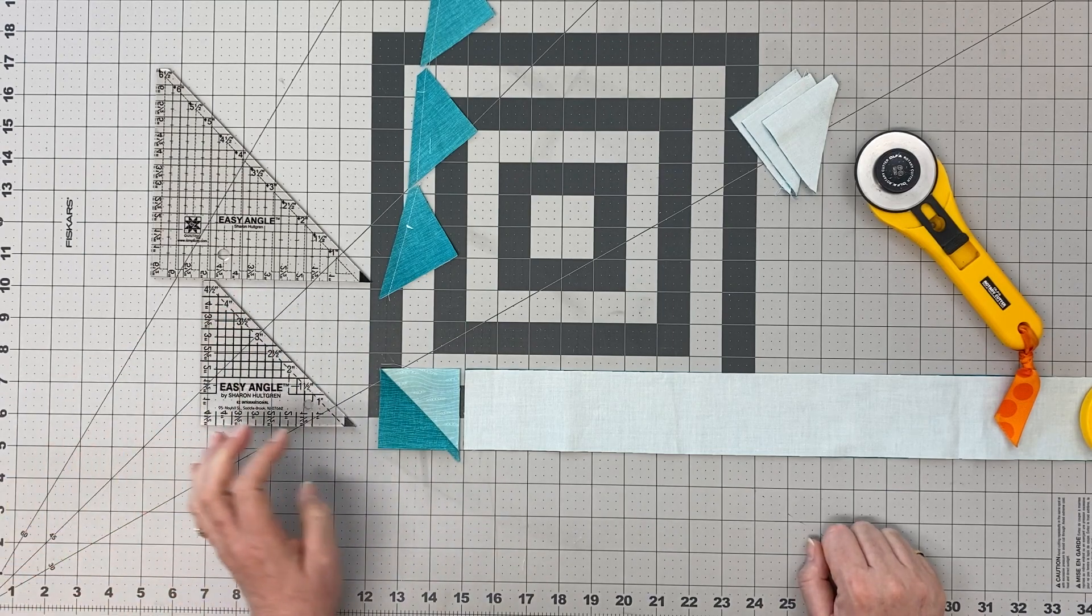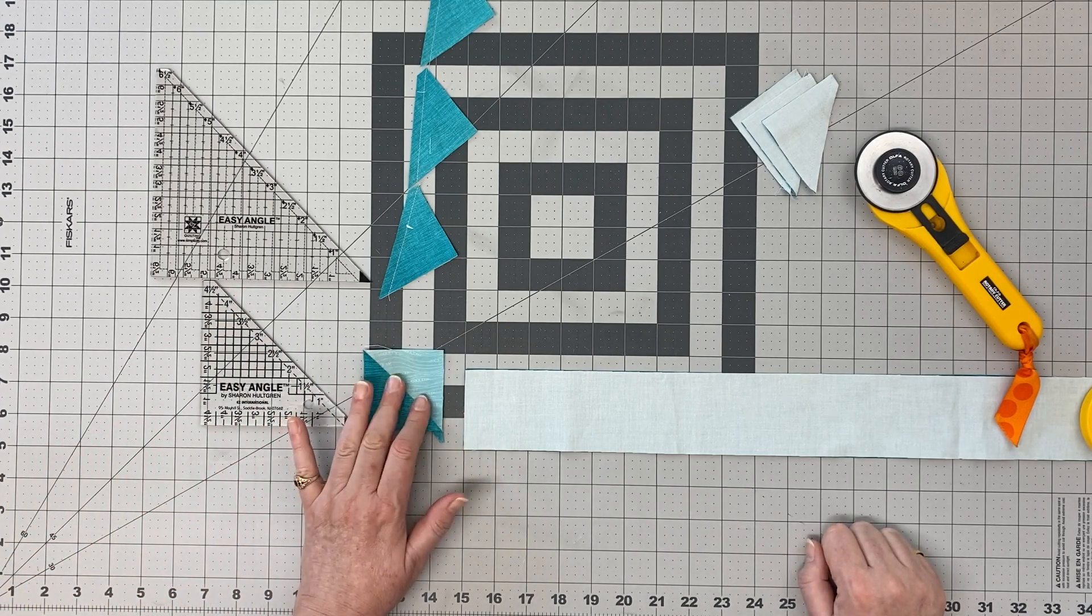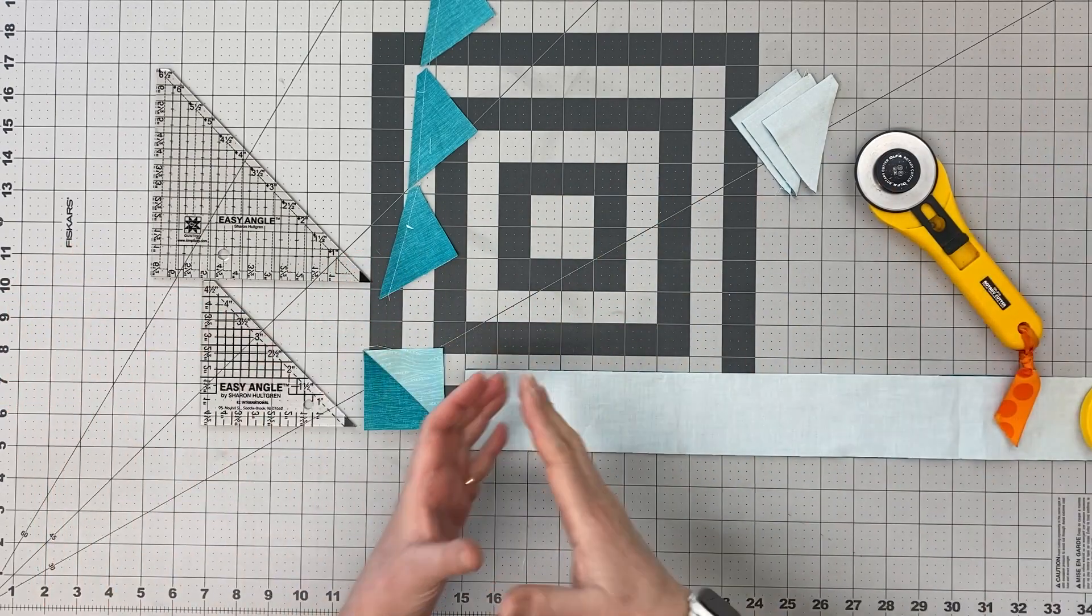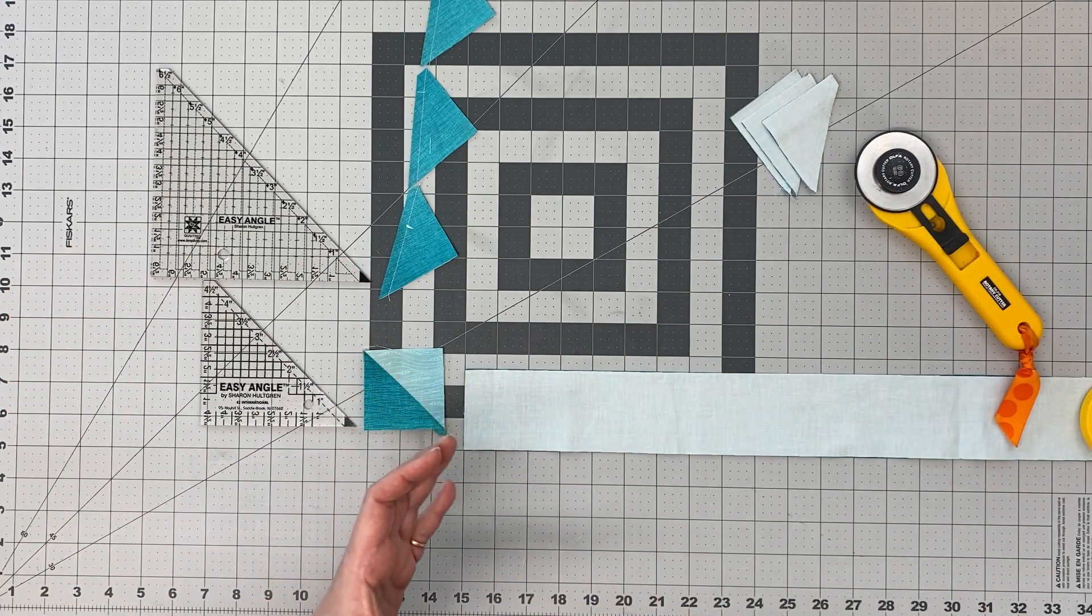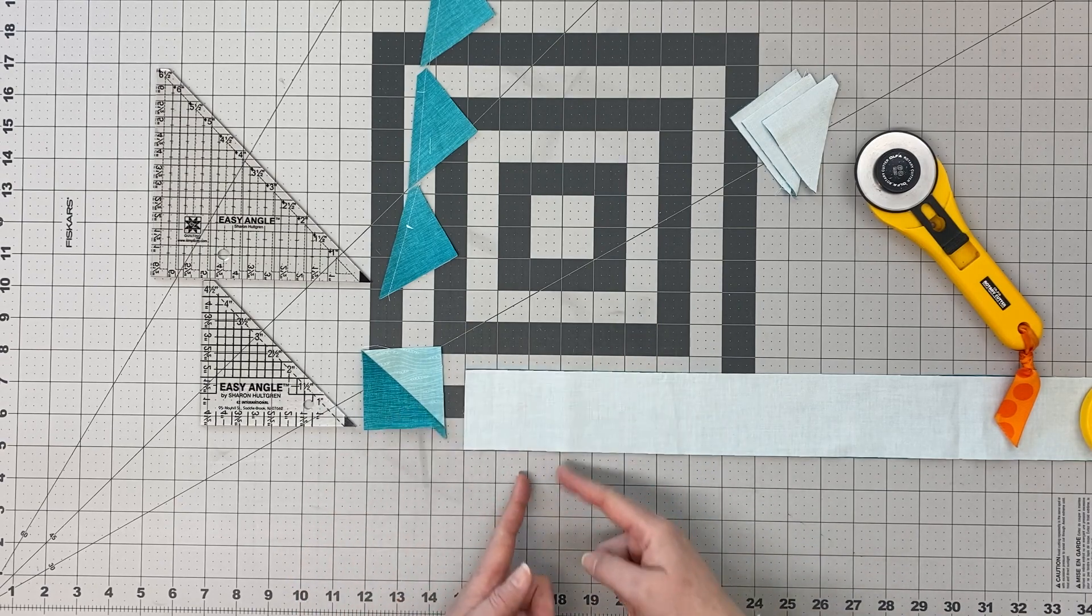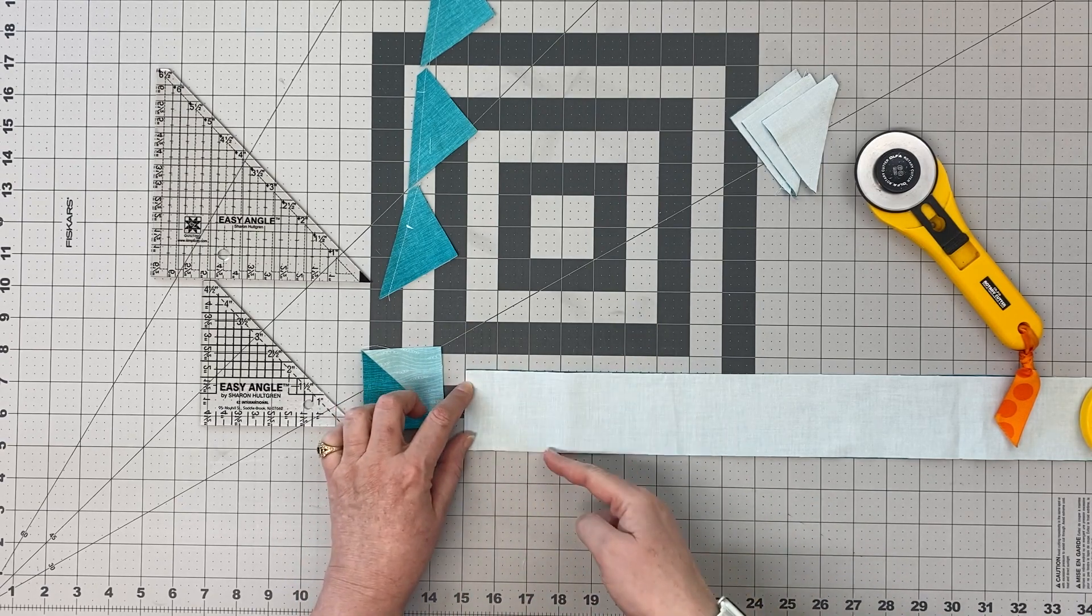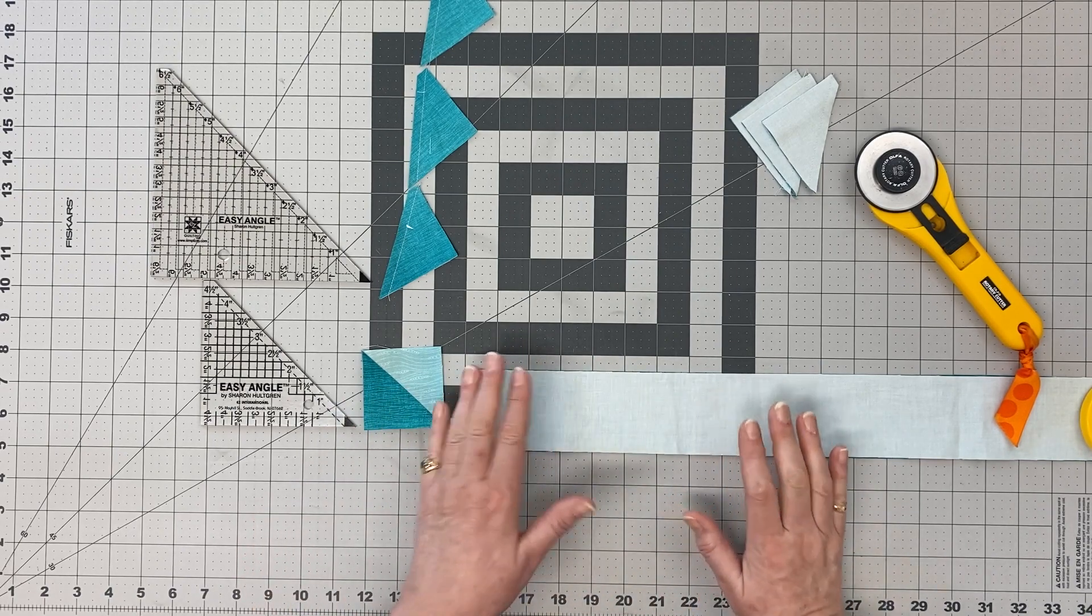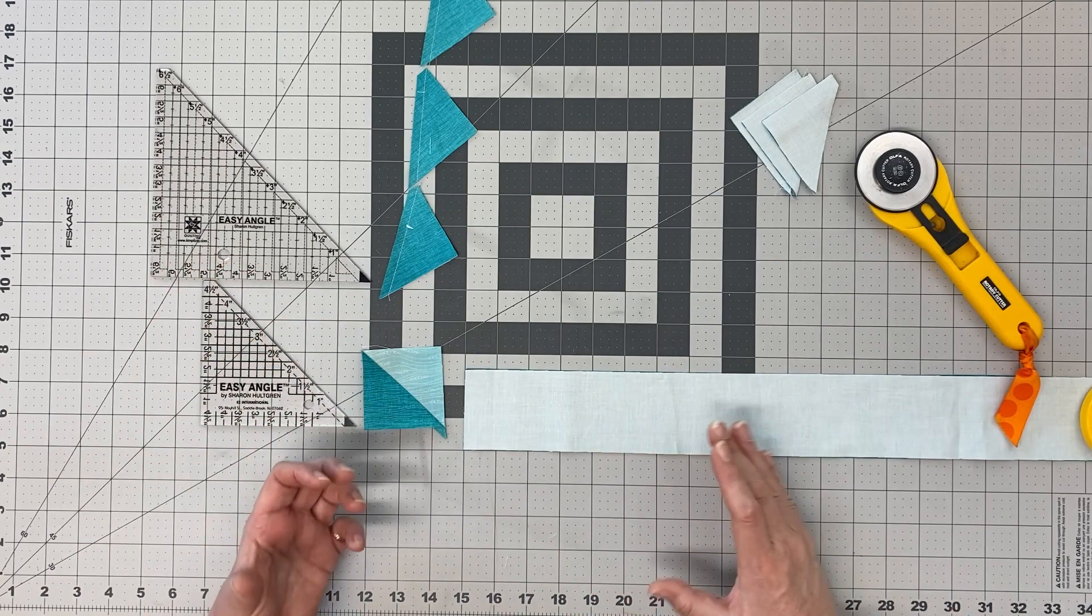sort that out, or use the cut large, sew together, and then trim back to the correct size method that a lot of us use. You take a square, either cut it in half and sew the two together, or draw a line on it and sew down either side of the line, then cut it in half. Either of those methods, when done with a large square and then trimmed back to the correct size, is actually the most accurate way to make an HST. I happen to like